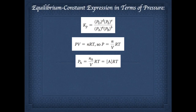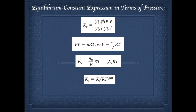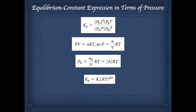Substituting into the Kp and Kc expressions, the additional factor to consider is delta n — the change in the number of moles of gas. For example, if you start with one mole of gas on the reactant side and end with two moles on the product side, delta n equals one. If the number of moles of gas is the same on both sides, delta n equals zero and Kp equals Kc. The equation relating Kp to Kc accounts for this delta n.